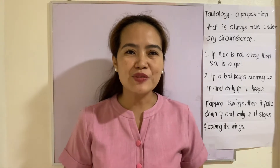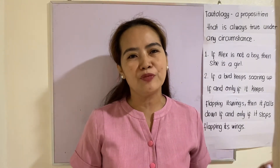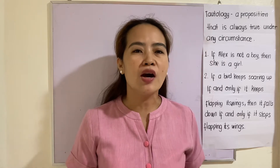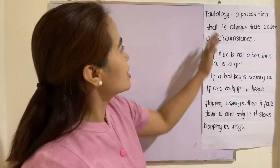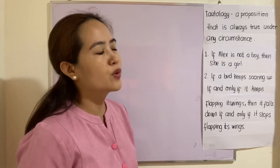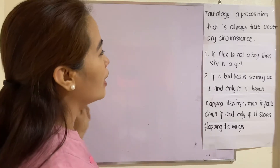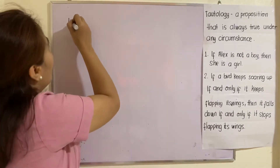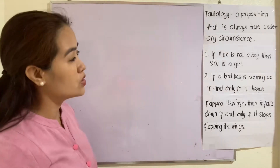Hey everyone, welcome to another session of Mommy Teo Teaches Math. Our topic for today is illustrating different tautologies and fallacies. What is a tautology? It is a proposition that is always true under any circumstance. Example one: if Alex is not a boy, then she is a girl. How do we determine if this one is a tautology or not?